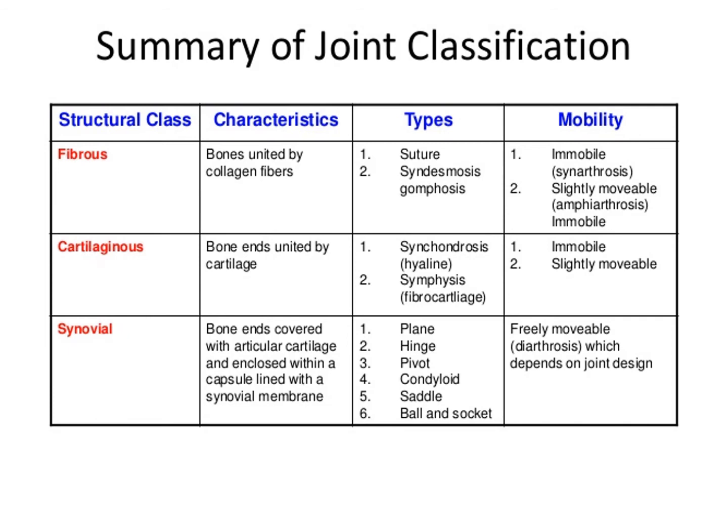Next we have cartilaginous joints, where bones are held together by cartilage. We can have a synchondrosis — immobile, formed by hyaline cartilage — or a symphysis made out of fibrocartilage where there's some movement, making it an amphiarthrosis. Finally, synovial joints have the ends of the articulating bones covered with hyaline cartilage, creating a very slippery surface. These joints come in several types based on how they move — plane joints, hinge joints, etc. — and they are all freely movable diarthroses.